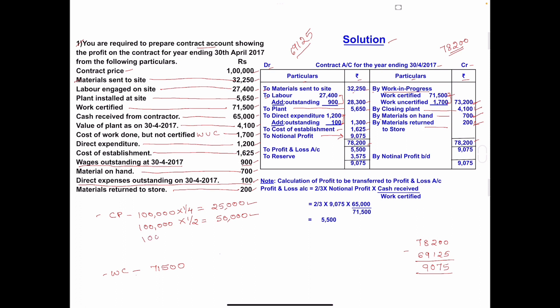The third condition: if work certified is more than half but less than three-fourths of contract price. Three-fourths of 1 lakh is 75,000. Work certified is 71,500, which is more than 50,000 but less than 75,000. Therefore, the third condition applies in this problem.